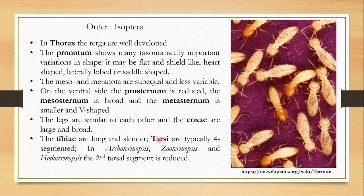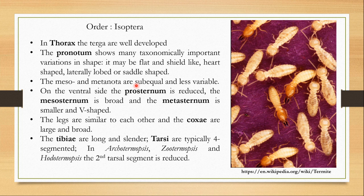In the thorax, the terga are well-developed. The pronotum, or dorsal tergum of the prothorax, shows many taxonomically important variations in shape — it may be flat and shield-like, heart-shaped, laterally lobed, or saddle-shaped. The meso- and metanota are sub-equal and less variable, so most variation is shown in the pronotum. On the ventral side, the prosternum is reduced and the meso- and metasternum is smaller and V-shaped. The legs are similar to each other, with the coxae being large and broad. The coxa is the segment of the leg that attaches it to the thorax.